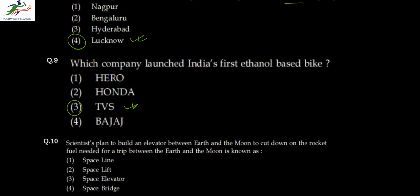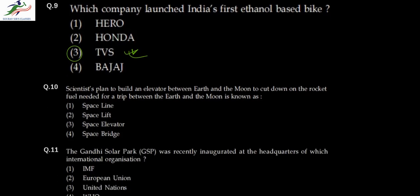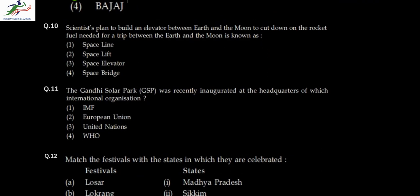Question ten: scientists plan to build an elevator between Earth and Moon to cut down rocket costs. The name of the elevator is a 'space elevator.' Even if you don't know, just go with the guess — it's in space and it's an elevator, so it's a space elevator. Question eleven: Gandhi Solar Park was recently inaugurated by Narendra Modi at the United Nations headquarters. So option three is correct.